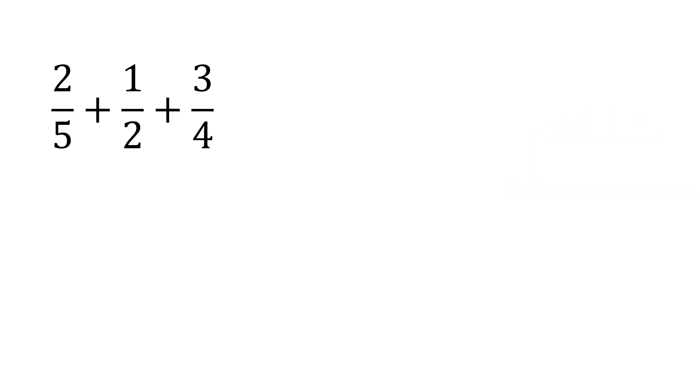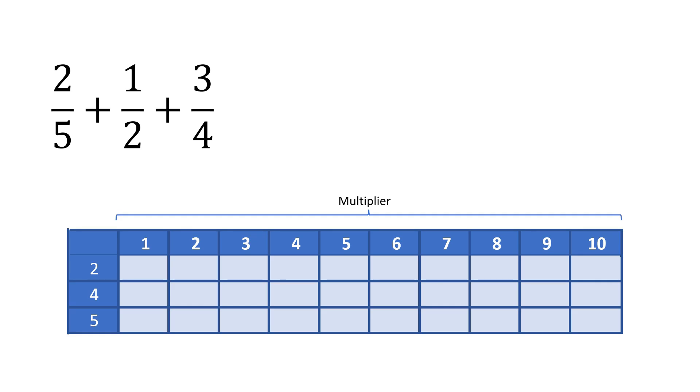First we have to find the least common multiple. To do that we build a table with multiples of 2, 4, and 5.